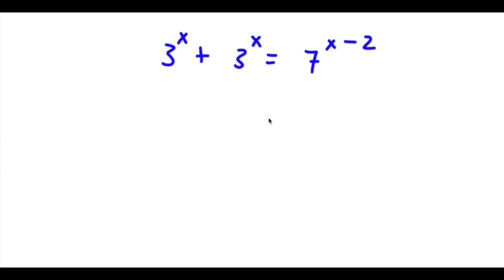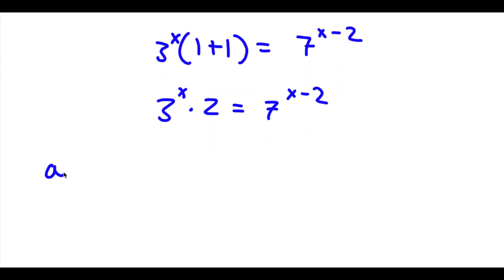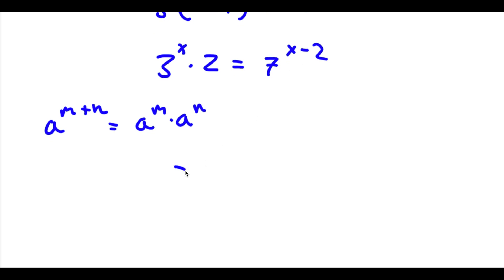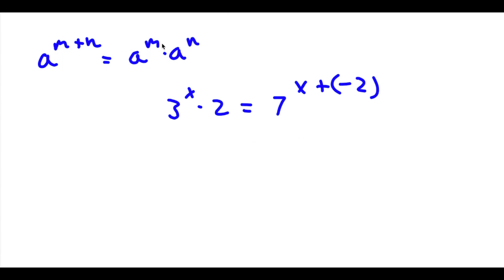I have 3 to the power of x plus 3 to the power of x is equal to 7 to the power of x minus 2. The first thing I'm going to do is factor out 3 to the power of x from the left-hand side, so now I have 3 to the power of x times 1 plus 1. 1 plus 1 is 2, so I have 3 to the power of x times 2 is equal to 7 to the power of x minus 2. Using a to the power of m plus n equals a to the power of m times a to the power of n, 7 to the power of x minus 2 equals 7 to the power of x times 7 to the power of negative 2.